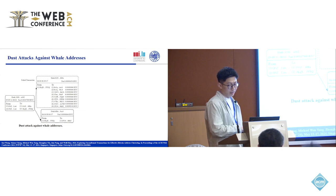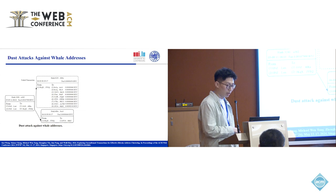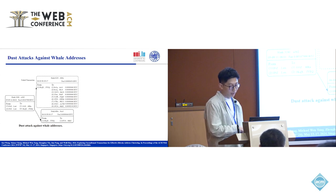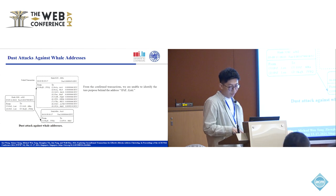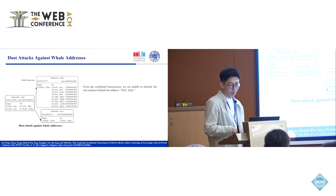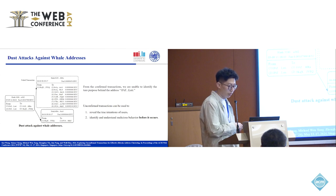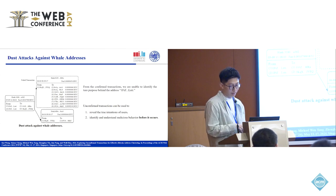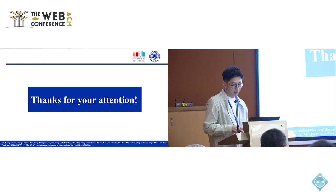Another example is a dust attack against real addresses. A dust attack sends tiny amounts of cryptocurrency, known as dust, to a wallet in order to uncover the identity of the owner. From the unconfirmed transactions, we can easily identify that an address intends to carry out a dust attack, revealing the true intentions of users and enabling identification of malicious behavior before it occurs. Thanks for your attention.